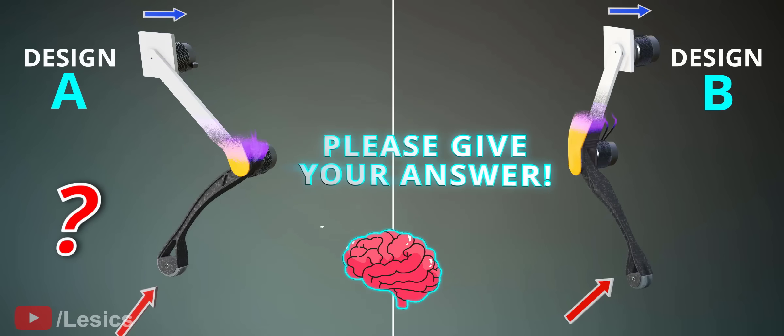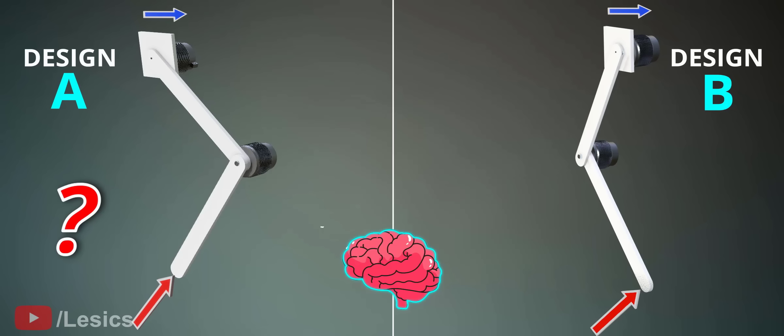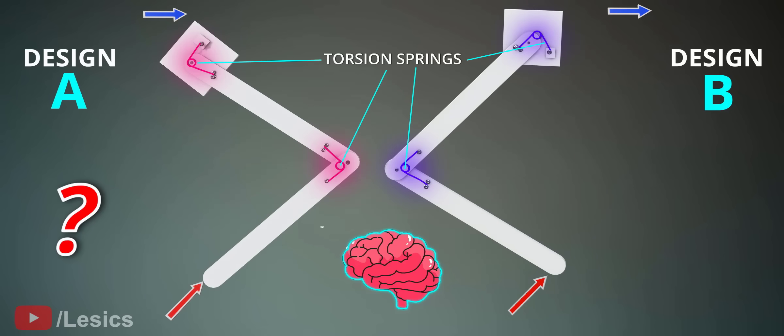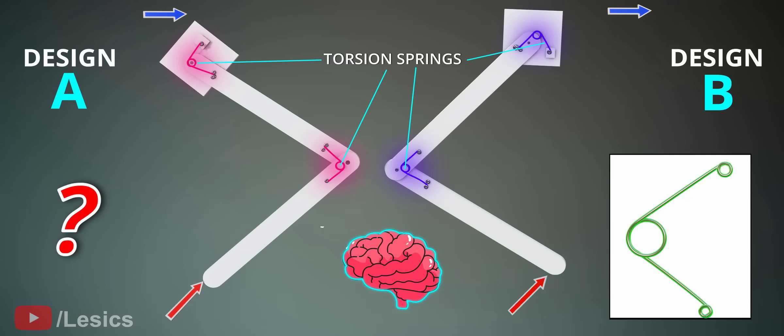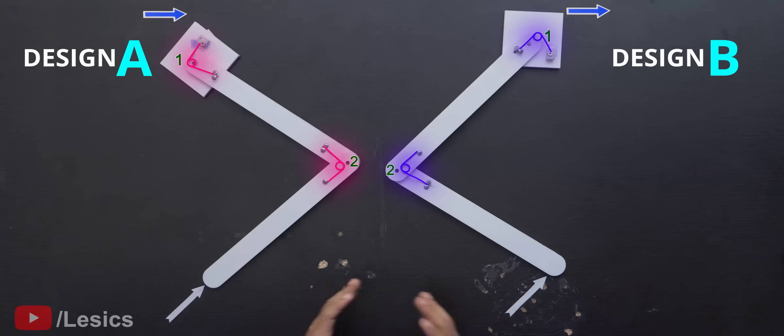To find out the answer, let's do an experiment. But here, instead of the electric motors, we are using torsion springs. What do you think? In which design will both of these springs get compressed? I hope most of you are given the answer B.